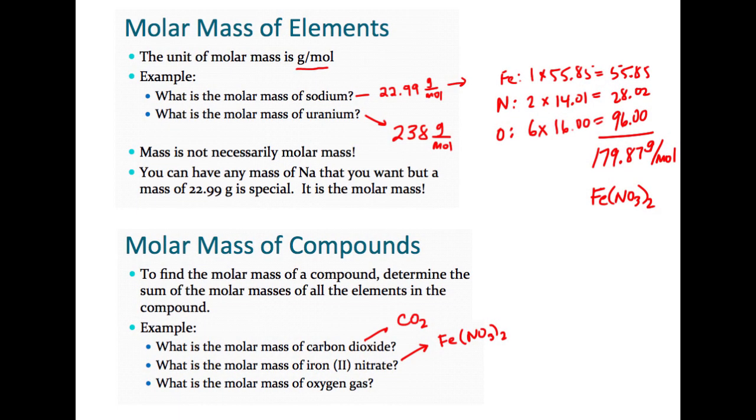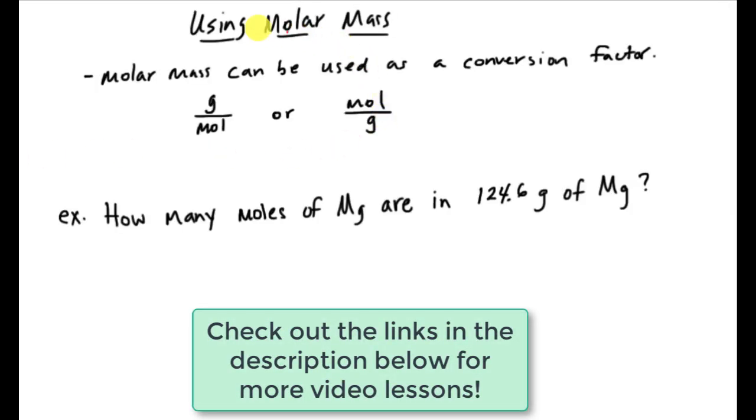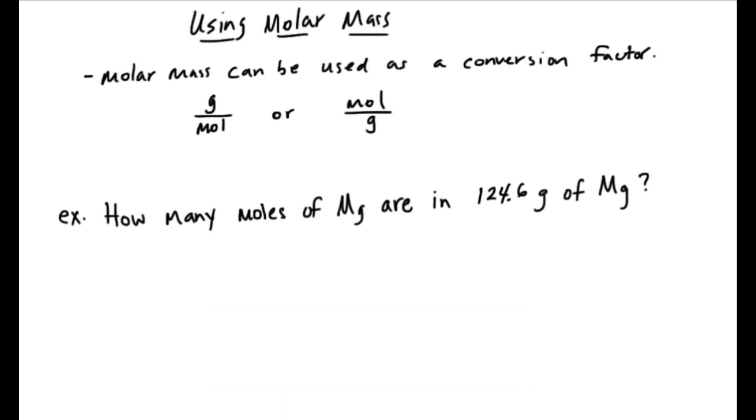So what do we do with this? How do we use this in chemistry? Well, we can actually use this just like we did the mole to particles. It's going to be a conversion factor between the two substances. So I can have grams over moles or I can have moles over grams depending on the setup of the problem.